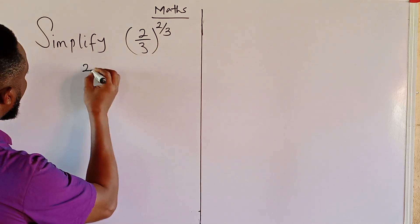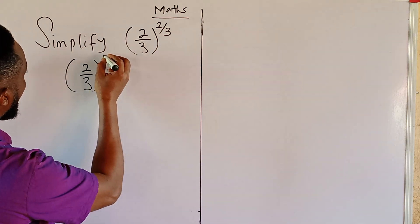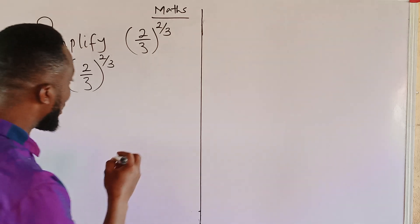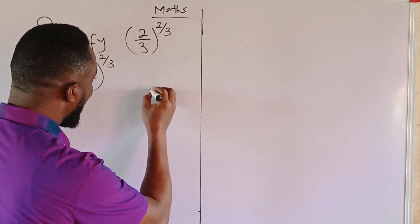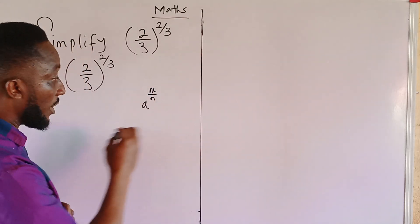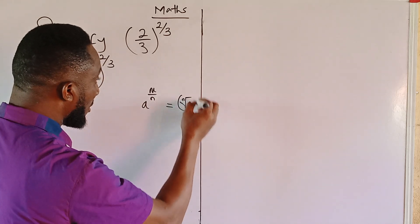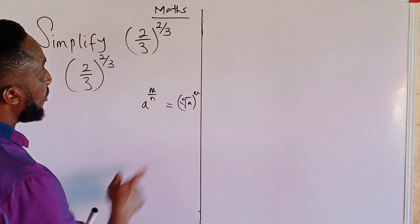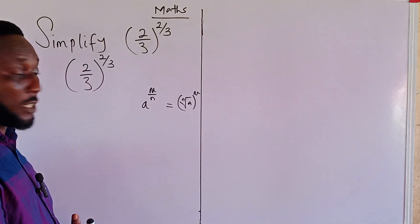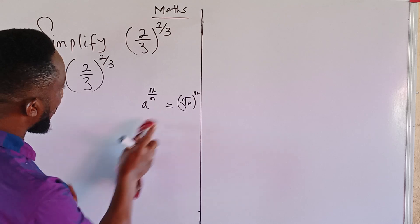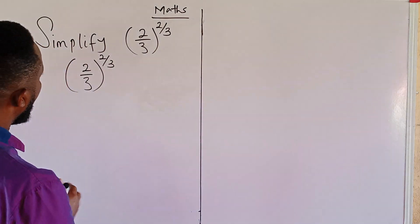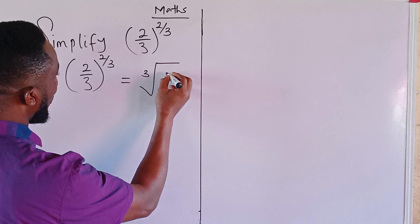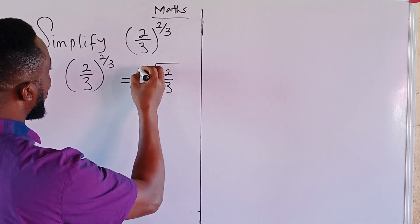The first approach is to use the fractional law of exponents. We have (2/3) raised to the exponent of two-thirds. The fractional law of exponents states that if we have a to the power of m over n, we can write this as the nth root of a raised to the m, or the nth root of a, raised to the power of m. Applying this, we take the cube root of the base (2/3) squared.